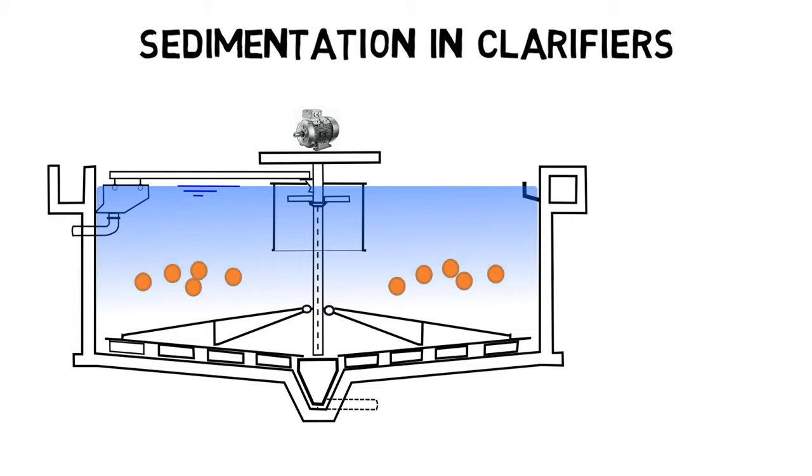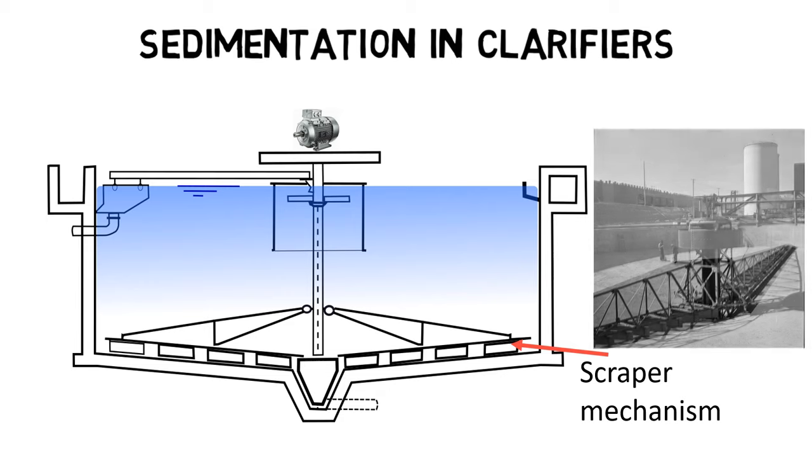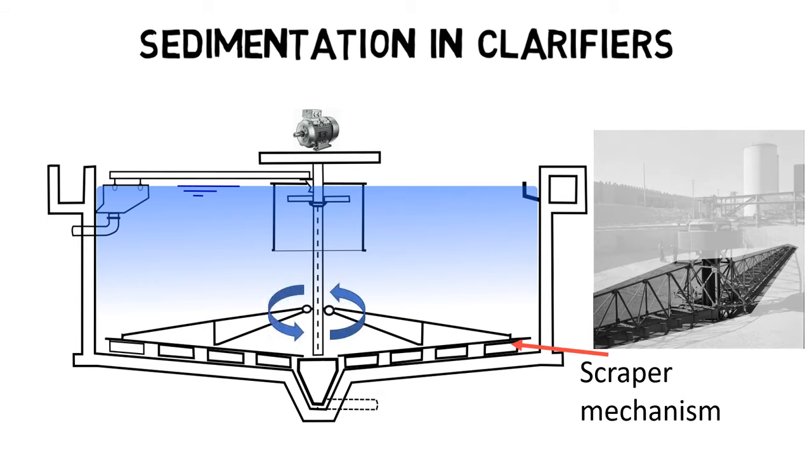Inside the clarifier, solid contaminants will settle down to the bottom of the tank where they are collected by a scraper mechanism and removed by another centrally located pipe. The scraper mechanism arms rotate slowly along the clarifier's perimeter and are attached to a centrally located shaft which is powered by a drive system on the clarifier bridge.